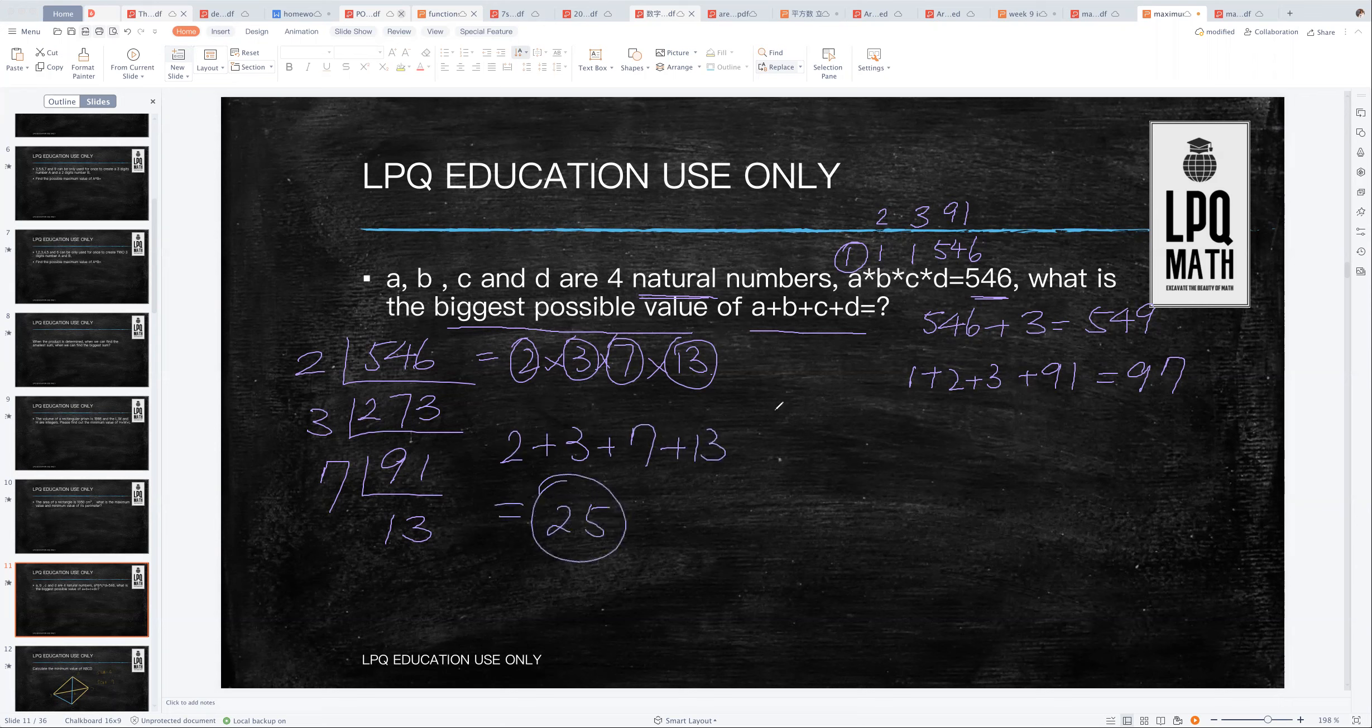You're going to see that the difference is actually very huge, right? The biggest could be 549 and the smallest could be 25.